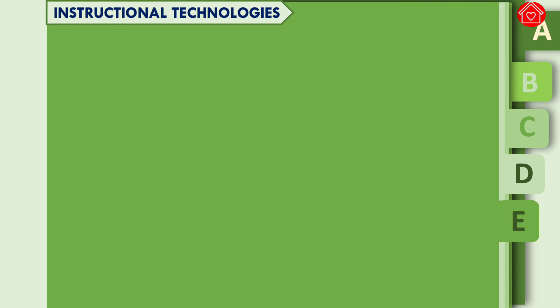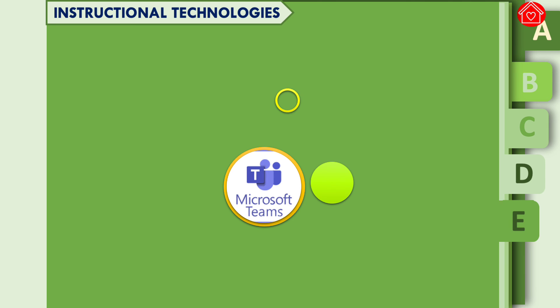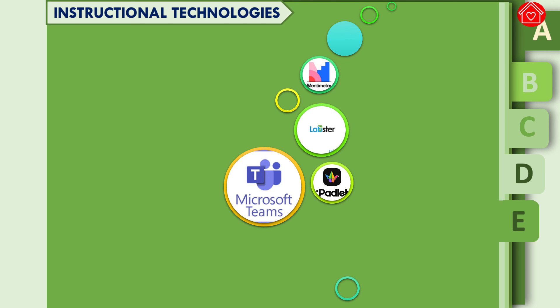In order to achieve the goal of the course, the instructor will be utilizing the following instructional technologies. First is Microsoft Teams, wherein the teachers and the students will be having their online synchronous session. The teacher will also be utilizing Padlet for online collaboration, where students could share their thoughts. They will also be having Lobster for interactive simulation, and Mentimeter for online collaboration. We will also be utilizing Kahoot for interactive assessment, and lastly, Blackboard Ultra for asynchronous session.